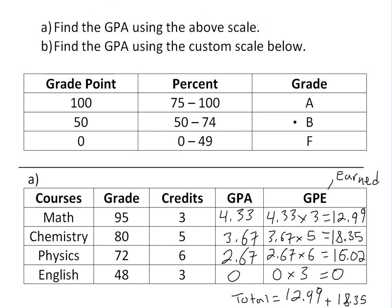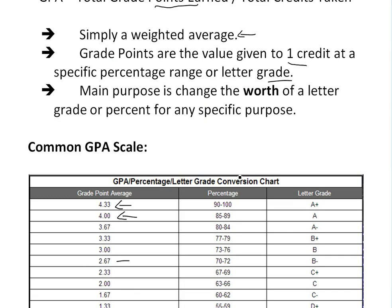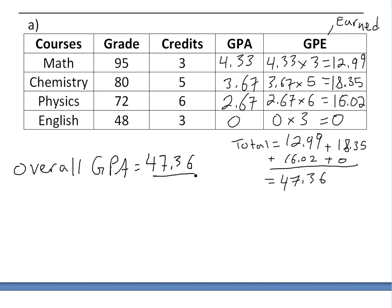That 47.36 is the total grade points earned. The GPA definition says we divide by the total credits taken: 3 plus 5 is 8, plus 6 is 14, plus 3 is 17 total credits. So the overall GPA is 47.36 divided by 17, which gives us 2.78. That is our grade point average out of a maximum of 4.33.